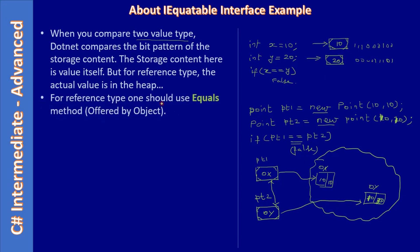For reference types, one should use the Equals method offered by Object. But the Equals method also won't check the content. So in that case, we have to override the Equals method.